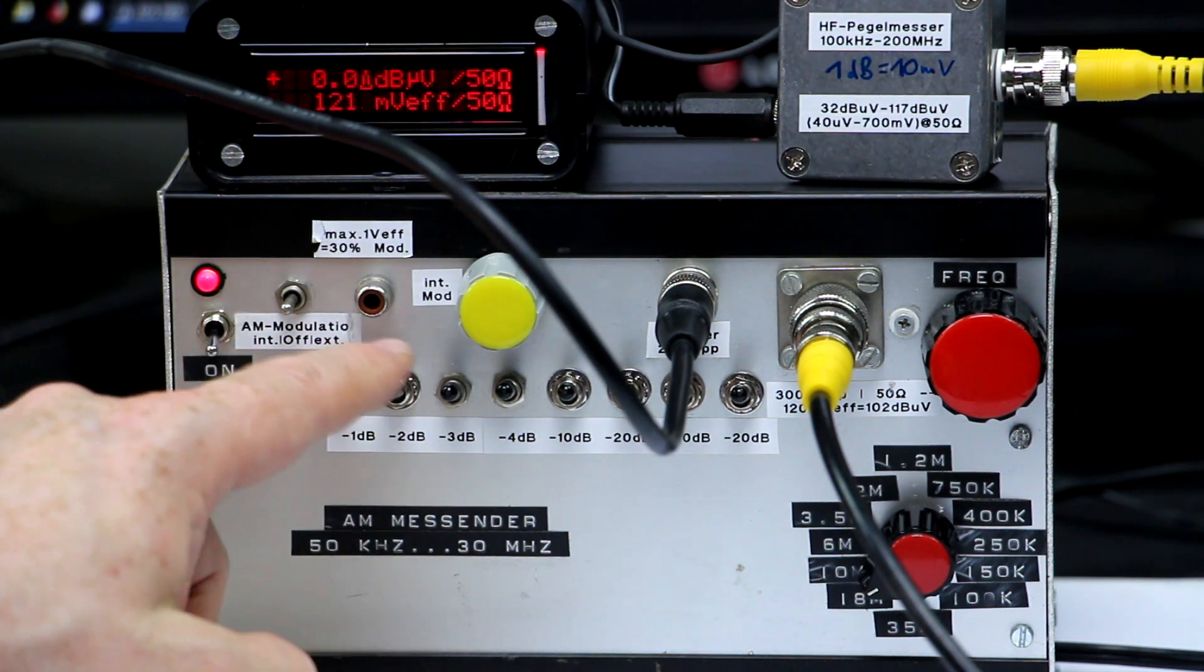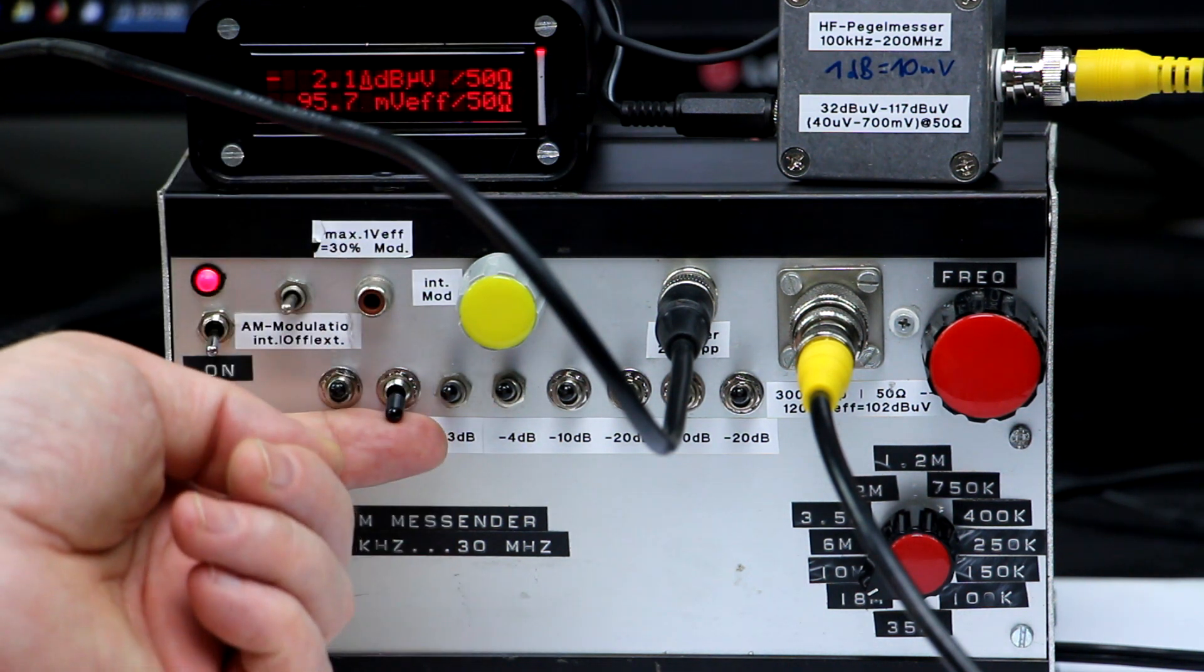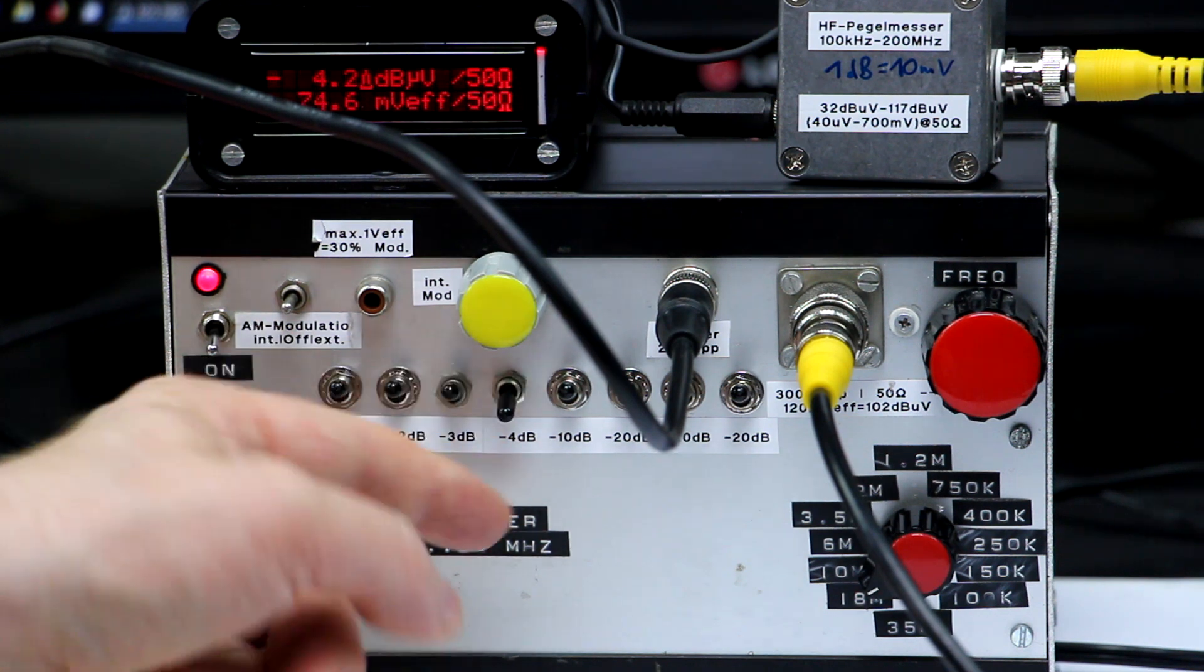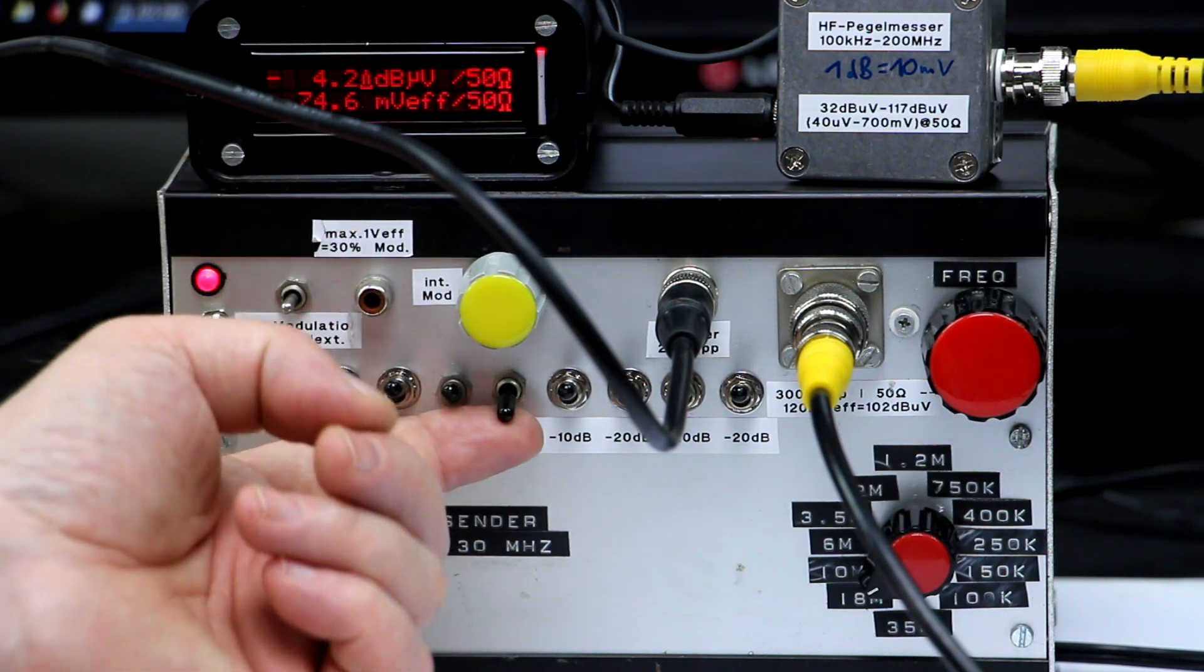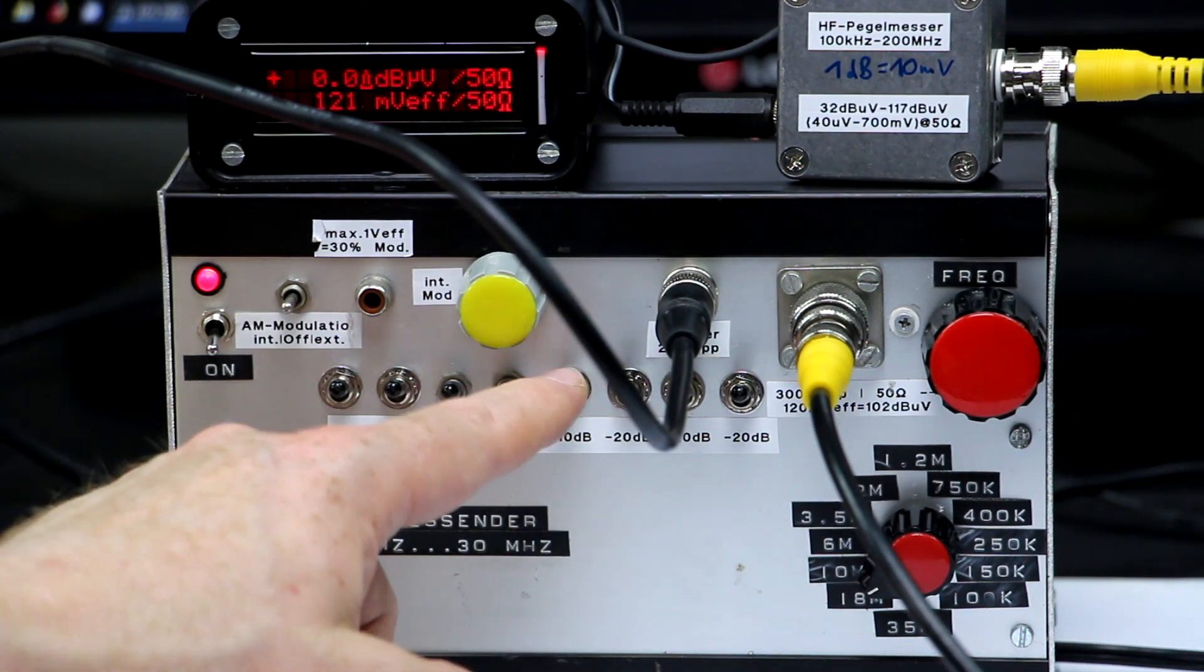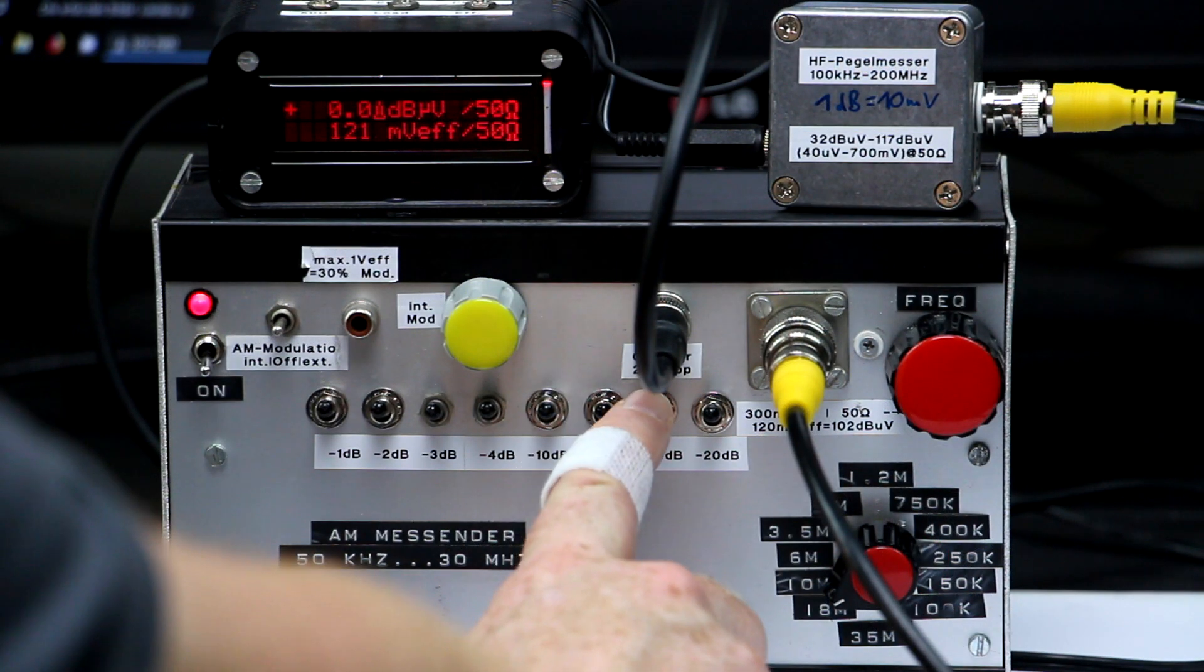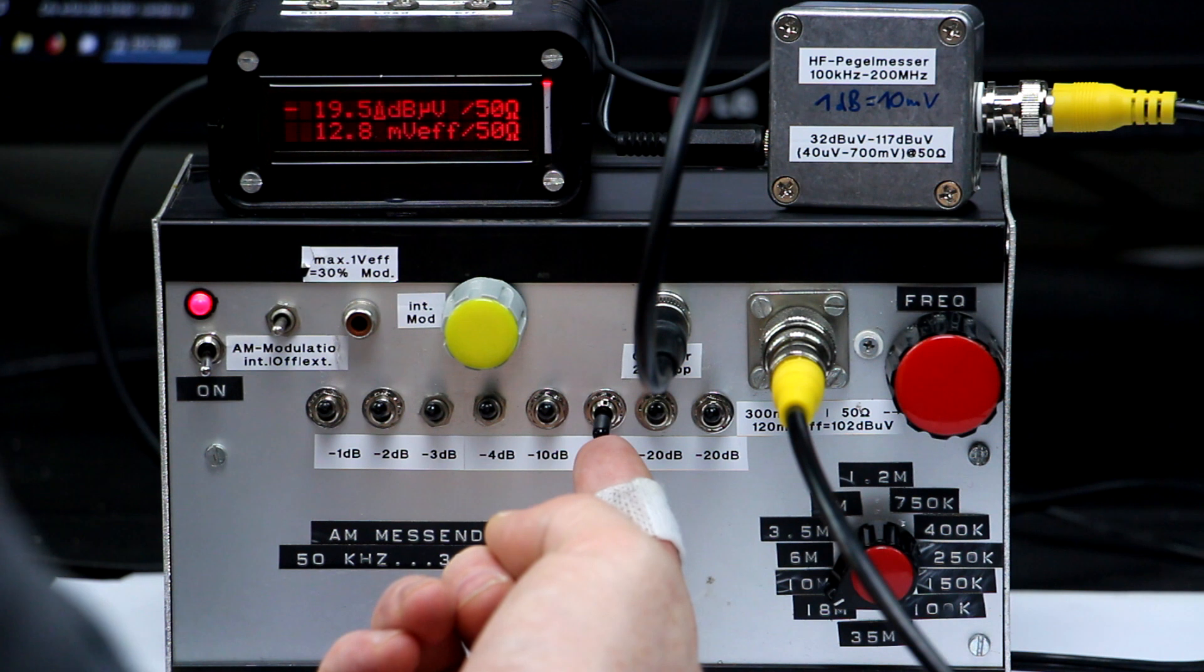The minus 2 dB gives minus 2.1 dB within spec. Minus 3 dB gives exactly minus 3. Minus 4 dB gives minus 4.2. That's okay. If we're within half a dB, then we're within the accuracy here of the log converter. Minus 10 dB gives minus 10.1. And finally, we have three identical minus 20 dB attenuators. Let's take a look. Minus 19.5.